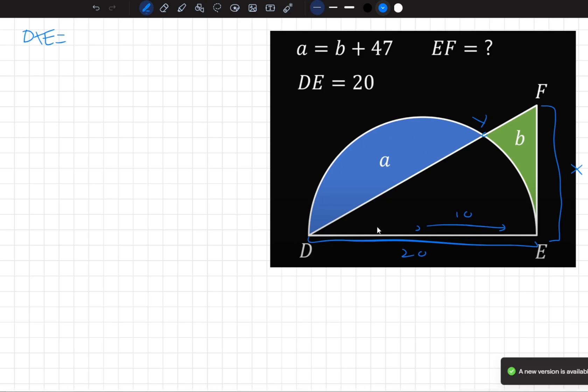That's going to be the area of the whole semicircle minus the area of A. So the whole semicircle is going to be 10 squared times 180 over 360 times pi, which is the same as 50 pi. So it's going to be 50 pi minus B minus 47.